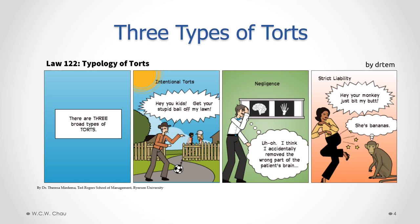The second drawing illustrates negligence — when someone acts carelessly and that carelessness causes an injury to another person. The third type is strict liability, which could involve being attacked by an animal and suing the owner of that animal for the injury.